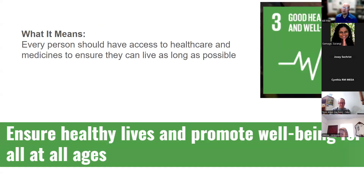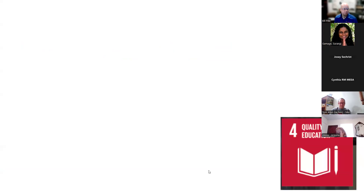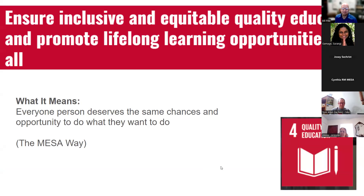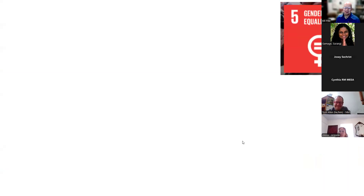You can see what I'm doing here — taking the goal, its official definition, and then breaking it down into what it actually means. Notice how these definitions are not super in-depth, because we're trying to take something huge and put it into something students can understand. Goal 4 is quality education: ensuring inclusive and equitable education, meaning everybody deserves the opportunity to do what they want to do.